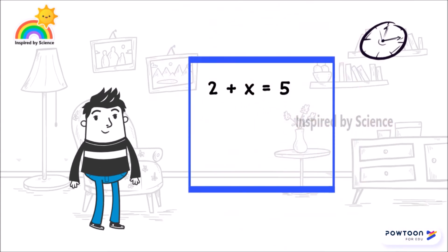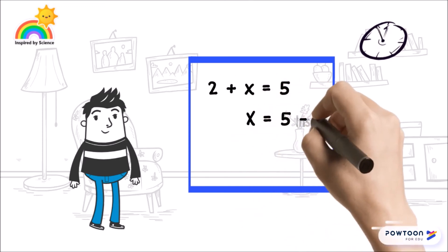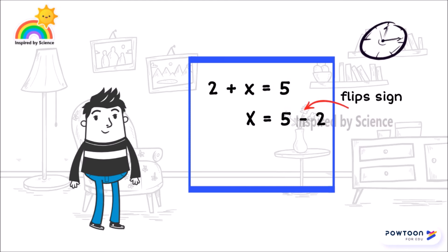An even simpler way to resolve this equation is by moving the constant values to the other side of the equation. By such movement, the constant value flips its sign. Here the plus turns minus. So the equation becomes x equals 5 minus 2.